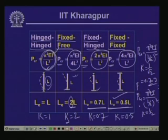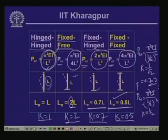We get different values of the effective length coefficient k based on support conditions, from which we can compute the critical compressive load and subsequently the critical compressive stress for each type of column member.